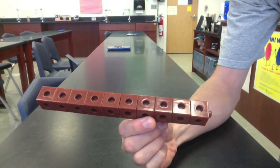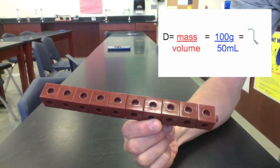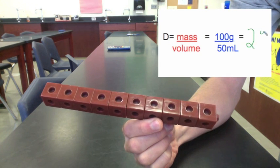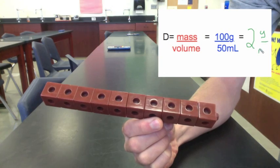Here's an object. Suppose this object has a mass of 100 grams and a volume of 50 milliliters. The density is 2 grams per milliliter.